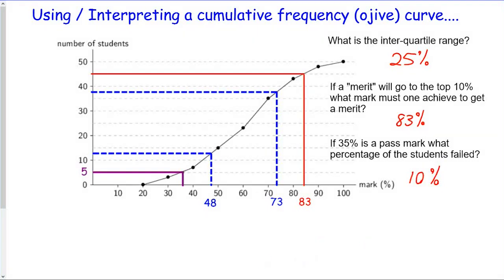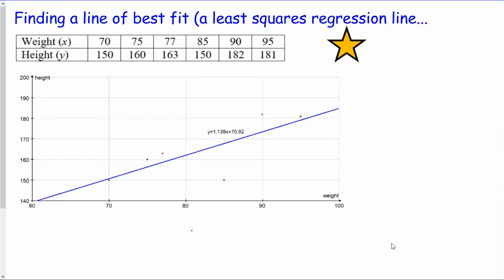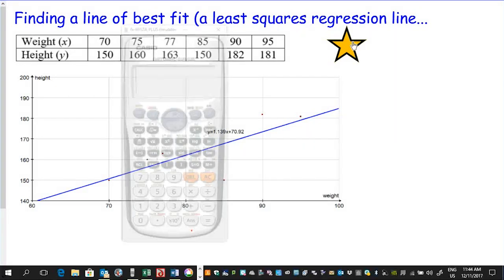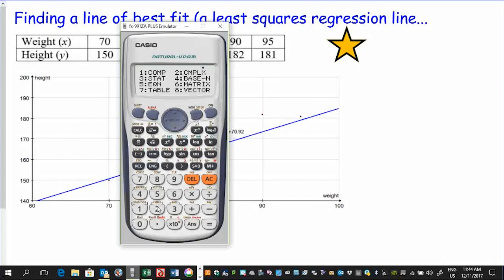The last topic is the line of best fit, also called the least squares regression line. We've got x and y values — in this case heights and weights — and we'd expect some relationship between them. We have a scatter plot and need to find the equation of the line of best fit. The only method required is using a calculator, so let's carefully enter our data.